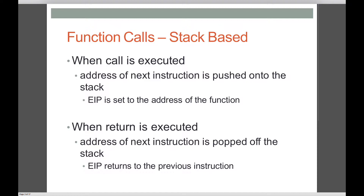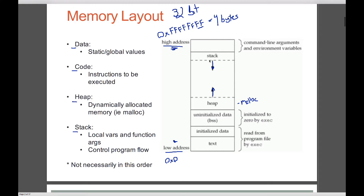So let's talk through some concepts. What happens when a call instruction is executed? A couple of things happen. First, the address of the next instruction is pushed onto the stack so that when the function returns, it knows where to return to. So if we have 'call foo' followed by 'add ESP, some value', the call instruction pushes that next address onto the stack. It also sets EIP to the address that represents the function foo, so the instruction pointer knows where that function exists in memory and can start executing instructions there.